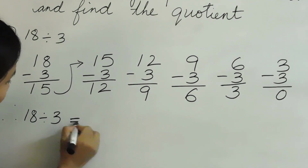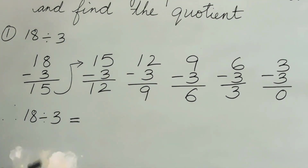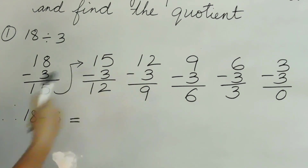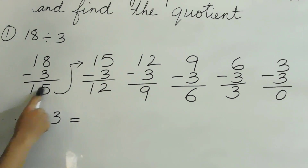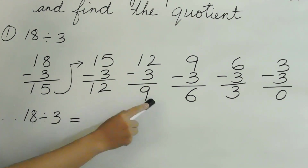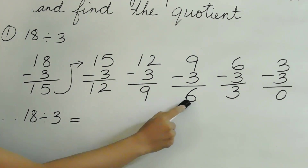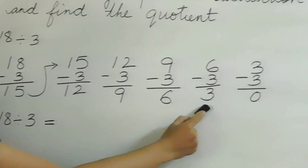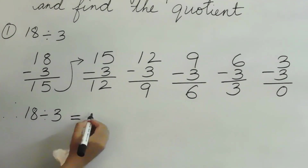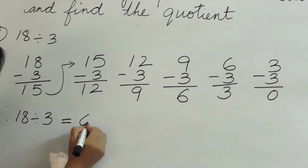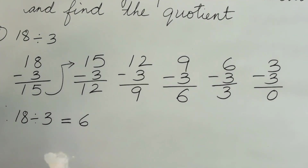The quotient will be how many times we subtracted 3 from 18. Let's count together: 1, 2, 3, 4, 5, 6 times. So the answer is 6.